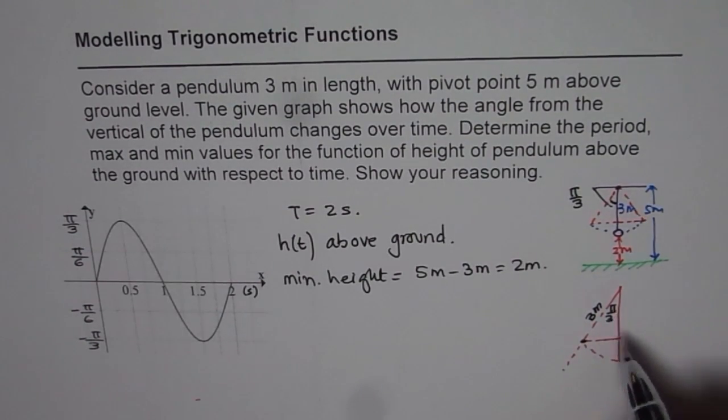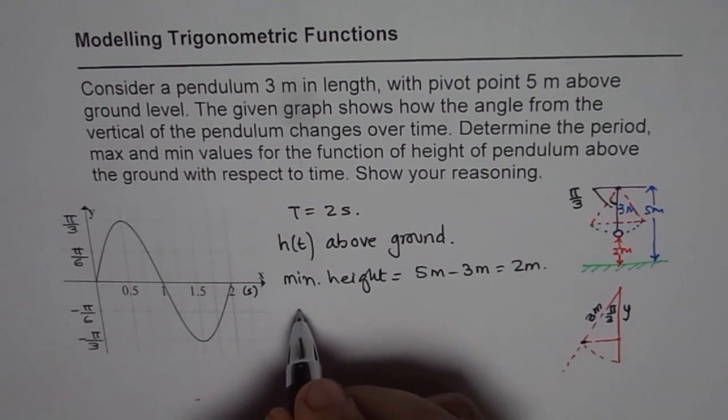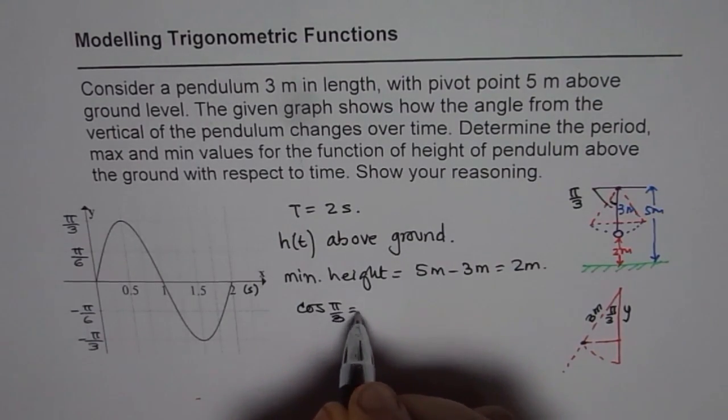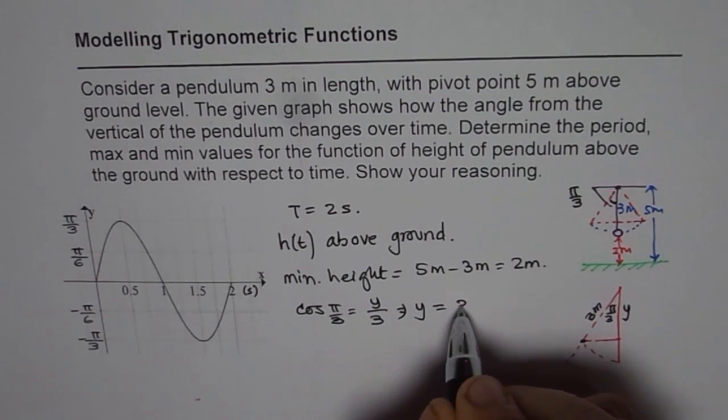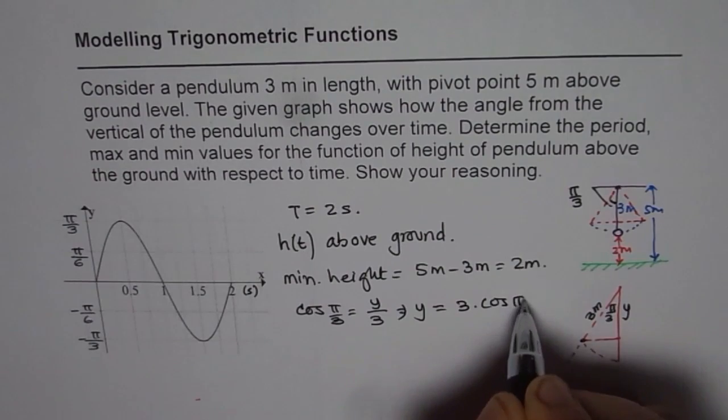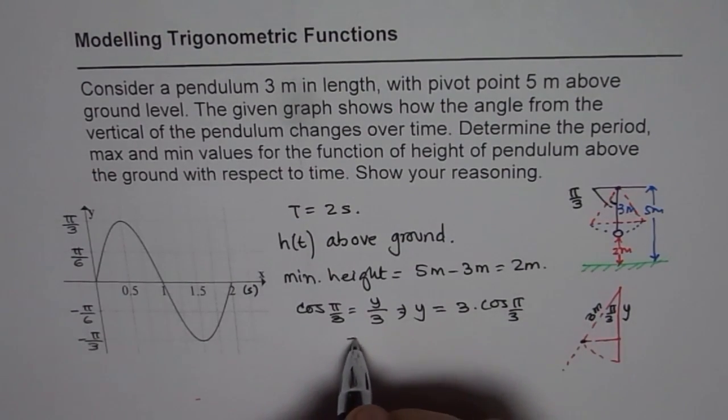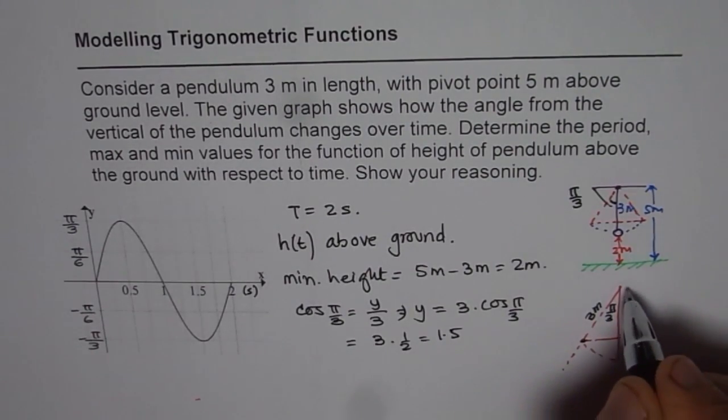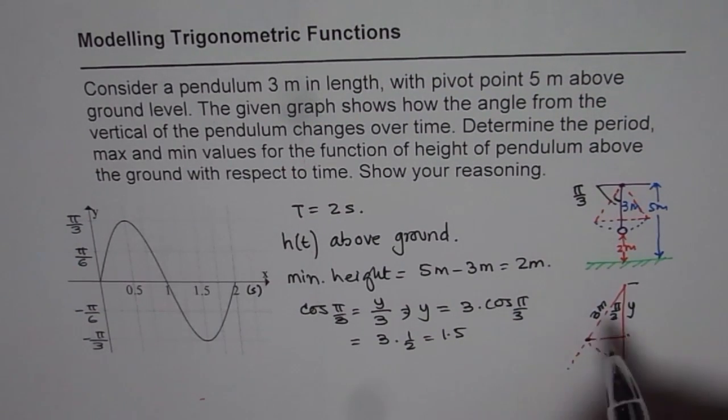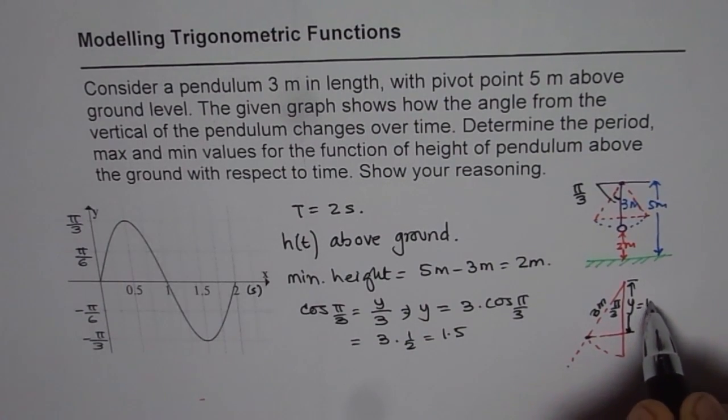Now for pi by three, that side will be how much? So we can find this length. Let us say this is y. Then we know cos of pi by three is y over three, or y equals three times cos pi by three. And cos pi by three you know is half. So which is equal to three times half, or 1.5. So this height here, the value of y is going to be equal to 1.5.